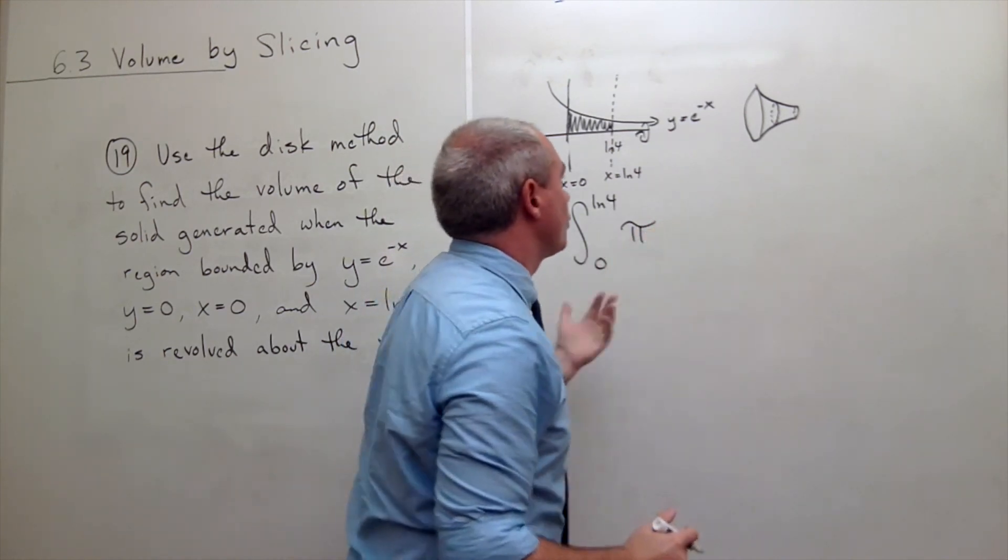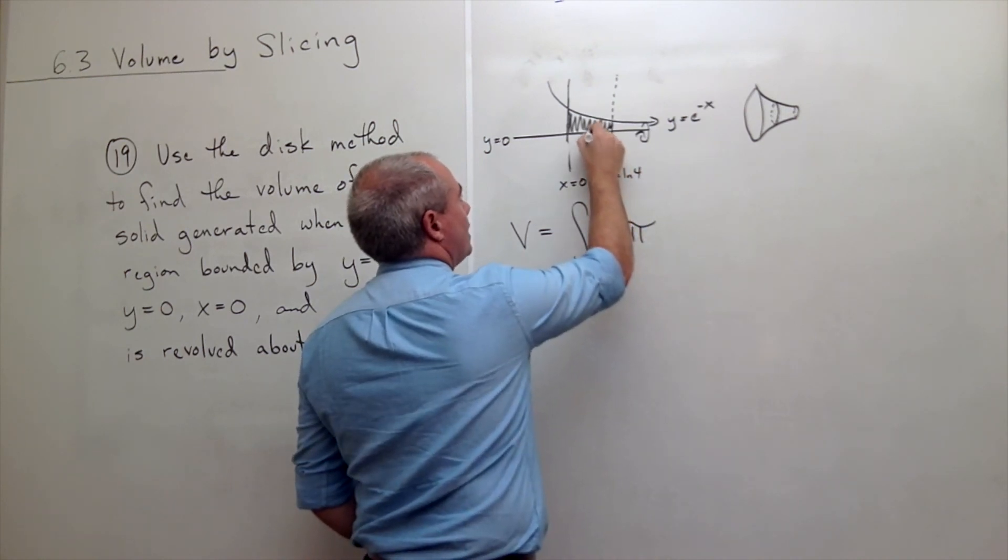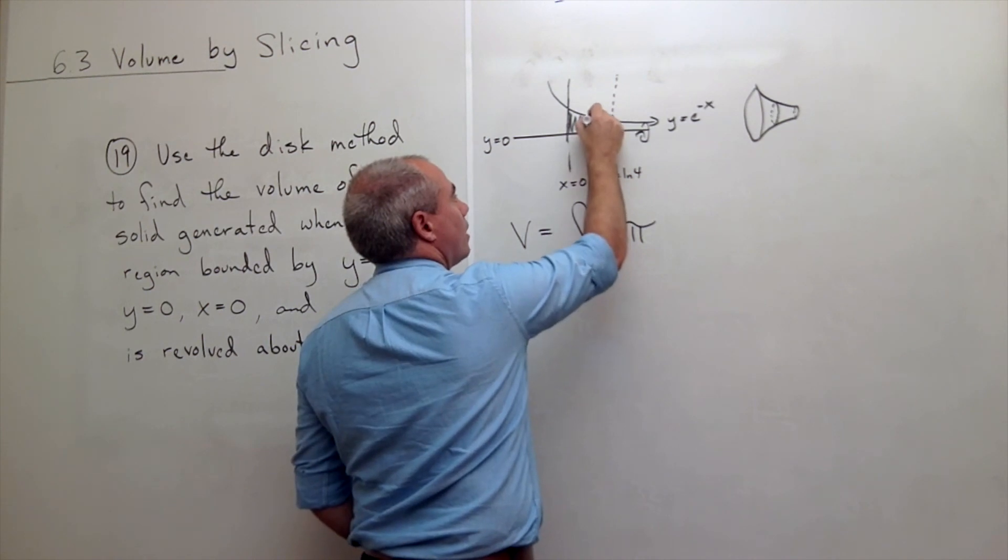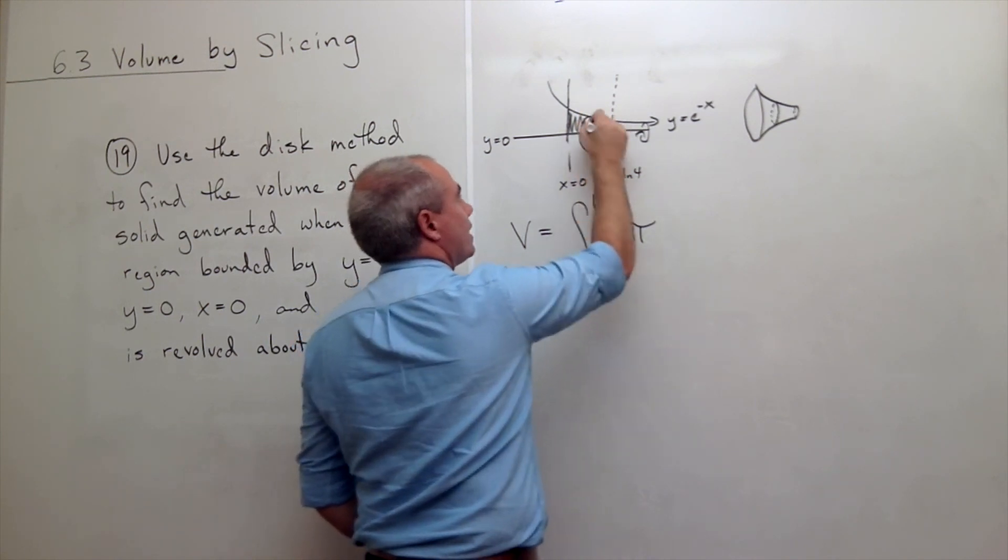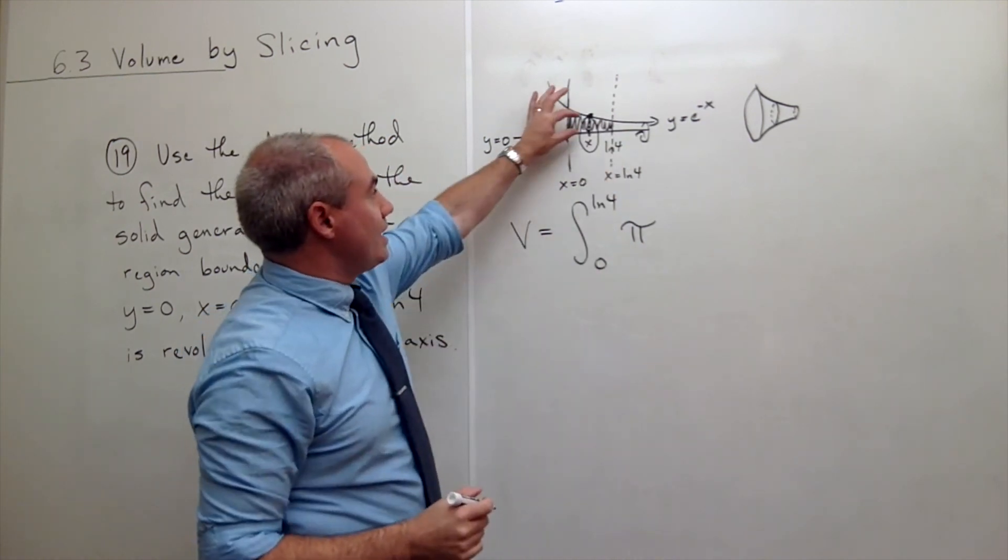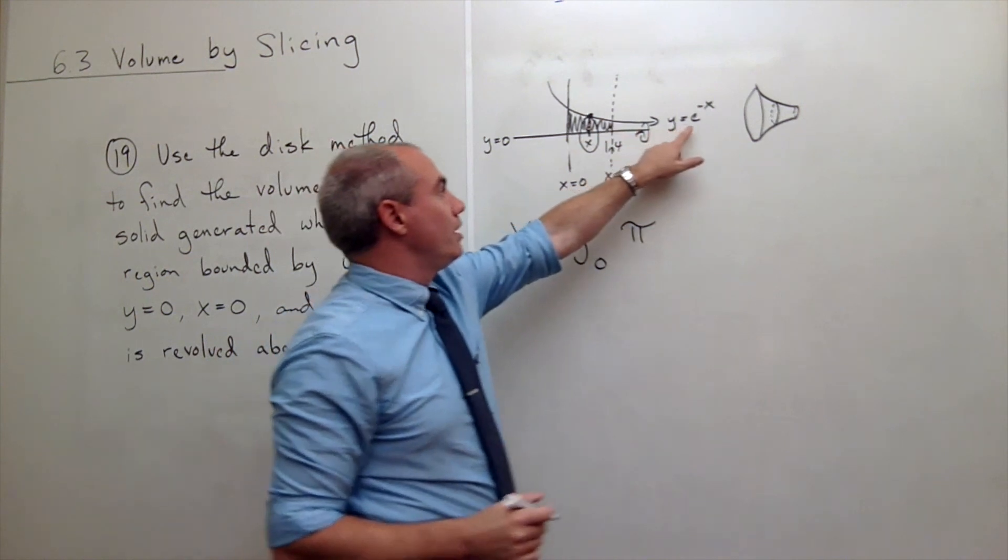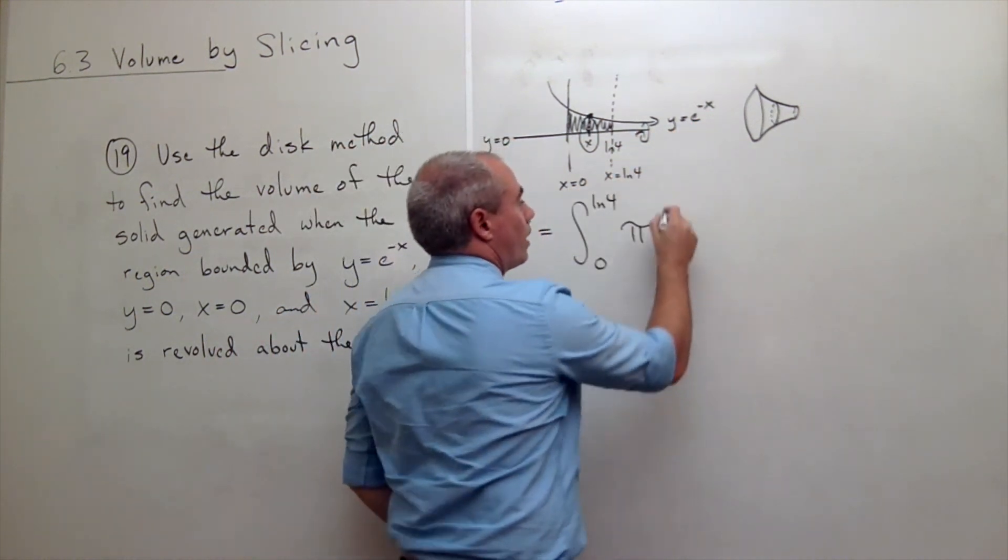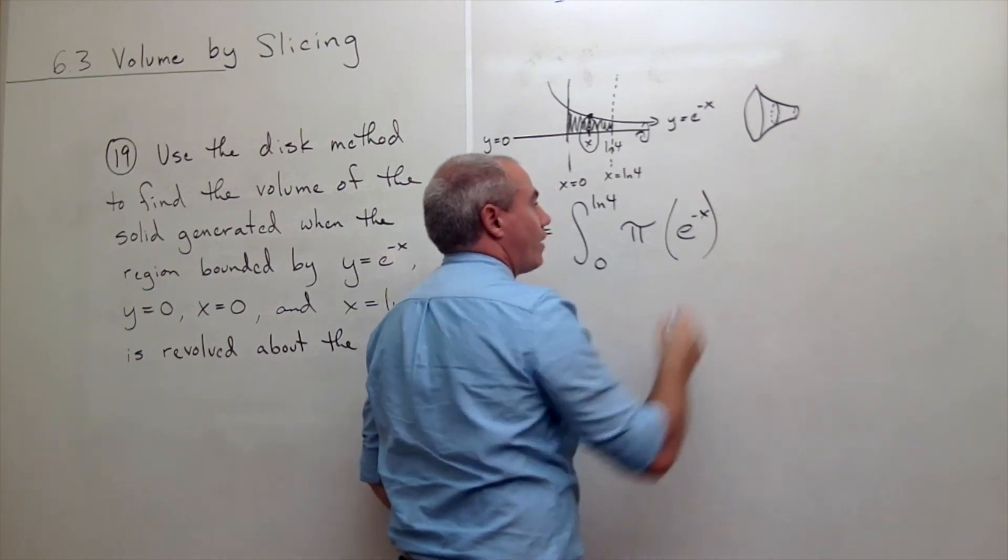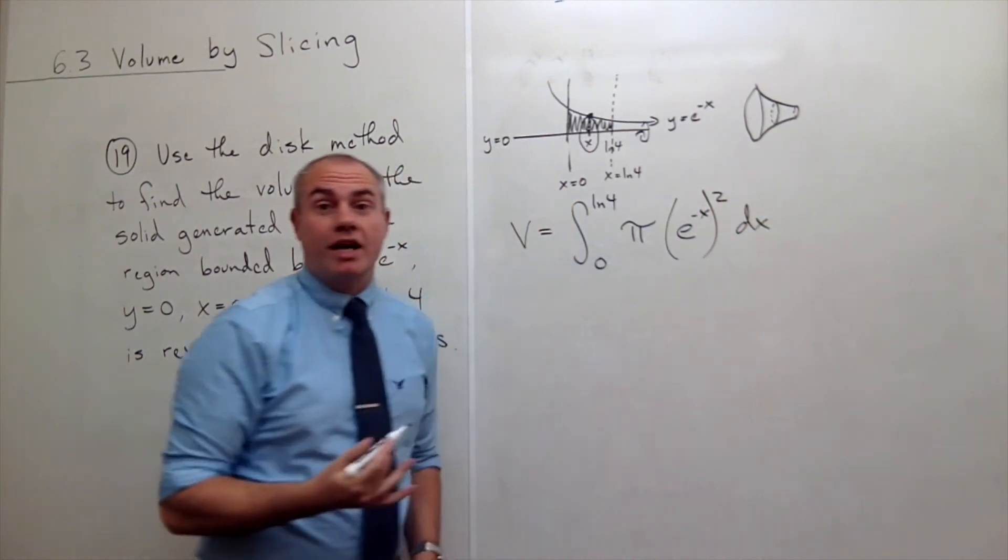What is r? It's the radius of one of these disks. So if I'm sitting here at a point x, what's the radius of this disk? It's the functional value. The radius of one disk here is the functional value e to the negative x. So what I want here is the radius is e to the negative x. And I want to square that dx.